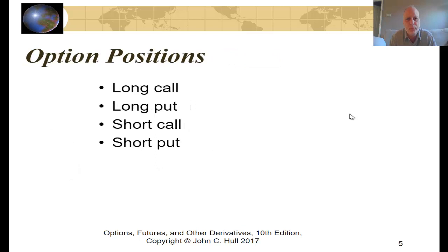You can have a long call, in which case you have bought the right to buy the underlying for some set price for some set time. You can own a long put, in which case you have purchased the option to sell an underlying security for a set price for a set time. Or you can have a short call, in which case you have sold somebody else the right to buy the underlying security for a set price for a set time. The purchaser of the call and the put will pay those who are short the right to buy or sell the underlying security. Those who have sold short calls and short puts act like insurance companies, and those who are long act like the purchasers of insurance. The short put is the case of somebody who has sold somebody else the right to sell an underlying security for a set price for a set time.